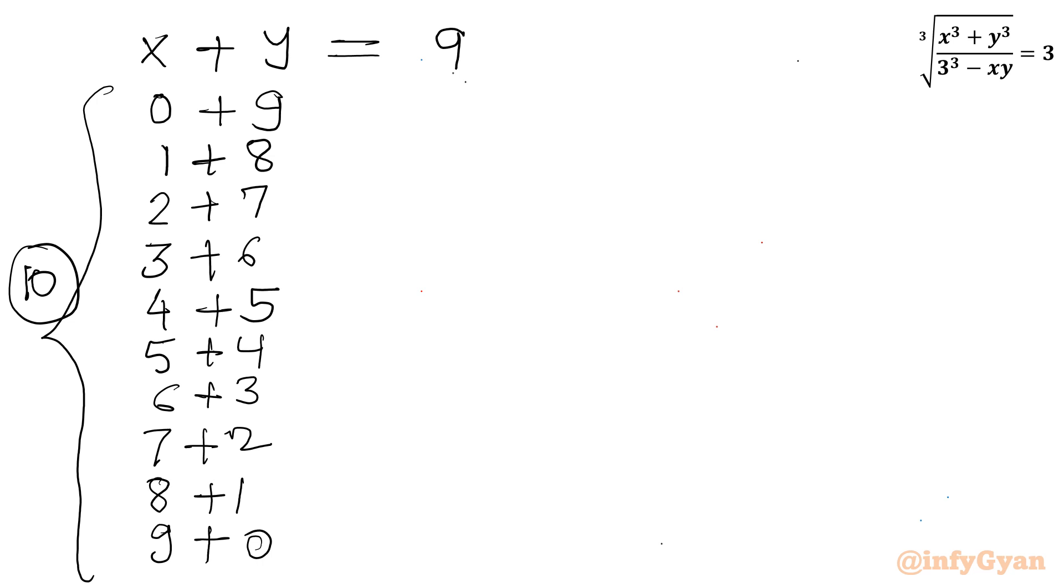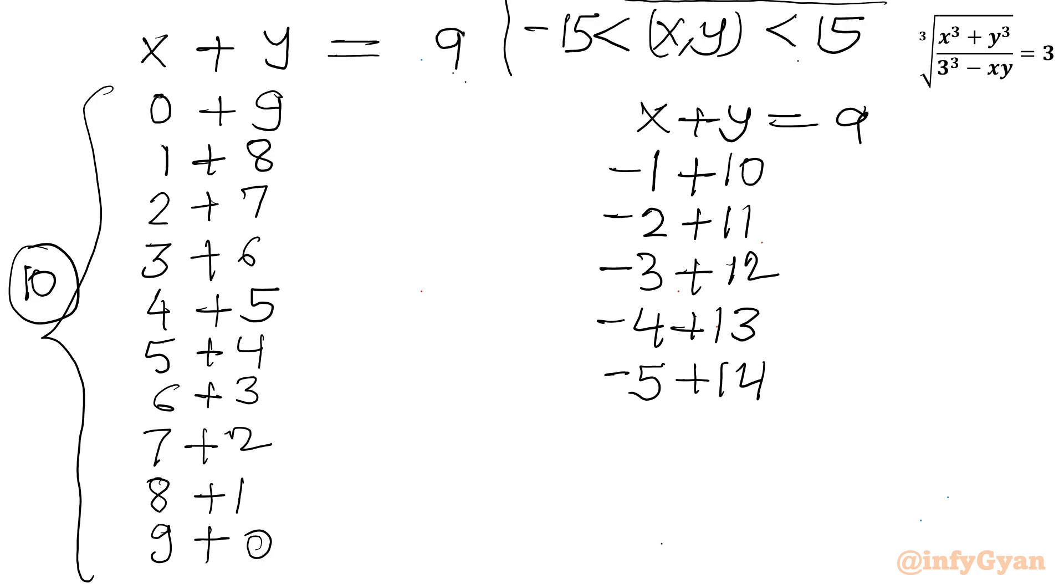Now let us check for negative values also. So I will be writing here x plus y equal to 9 for negative set. So if I will consider minus 1 as x then y would be equal to 10. If I will consider x minus 2 then y should be equal to 11, minus 3 then I should consider 12 here, minus 4 then I should write 13 here, minus 5 then I will be writing 14 here. After that if I will write then minus 6 and 15 which is not in the interval. x y should lie in the interval minus 15 to 15 only. So I am not writing.